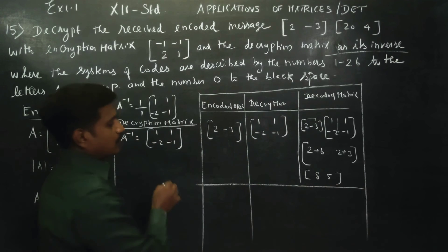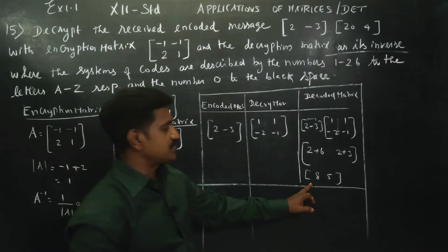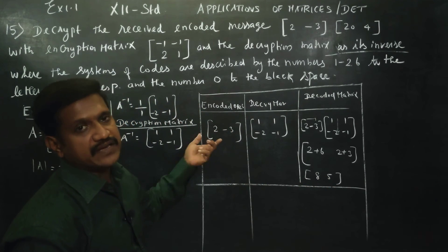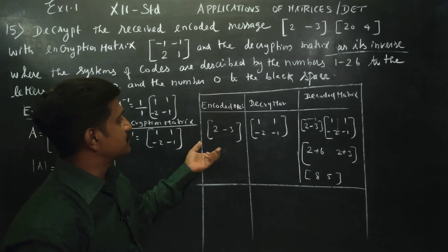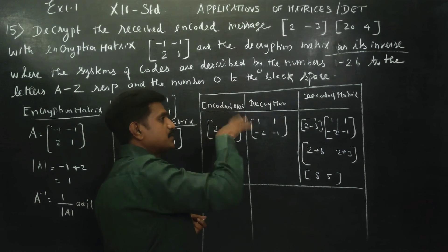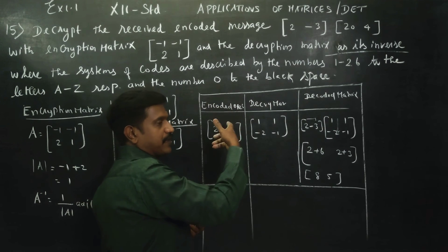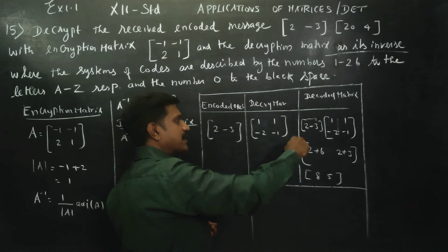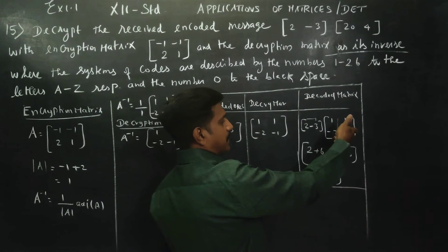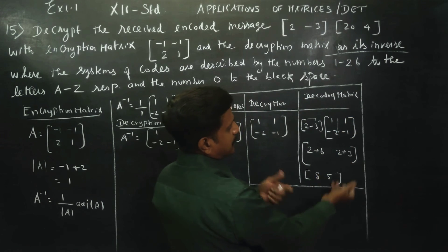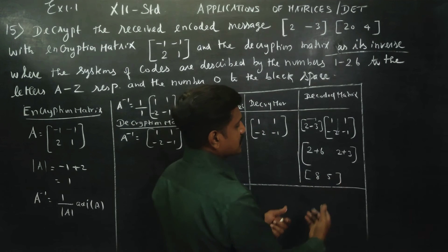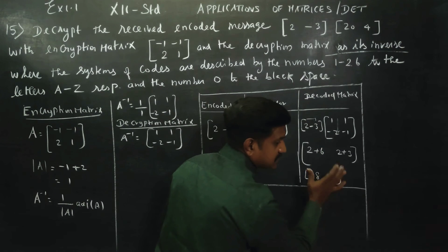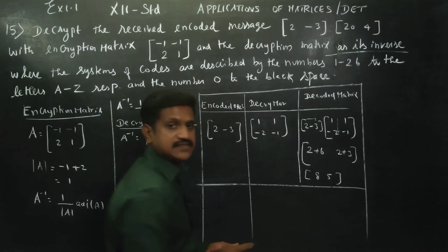So the original decoded message for the first encoded pair is 8 and 5. The encoded message 2, minus 3 has been decrypted using the decryption matrix, and the result is 8, 5.